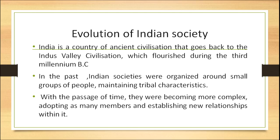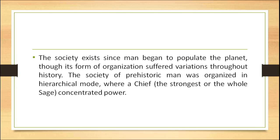Coming to the evolution of Indian society — India is a country of ancient civilization that goes back to the Indus Valley civilization, which flourished during the third millennium BC. In the past, Indian societies were organized around small groups of people maintaining tribal characteristics. With the passage of time, they became more complex, adopting more members and establishing new relationships. The society exists since man began to populate the planet, though its forms of organization changed throughout history. The society of prehistoric man was organized in a hierarchical mode, where a chief — the strongest person or a wise sage — held the most concentrated power.